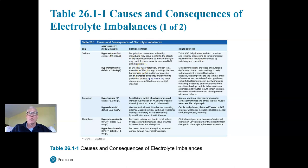Hyponatremia occurs when we have too much water on board — either from drinking too much water, or if we don't have enough aldosterone secreted into the circulation. Without sufficient aldosterone, we won't be able to reabsorb the appropriate amount of sodium in the distal tubule of the kidneys and collecting ducts, and we'll have hyponatremia.